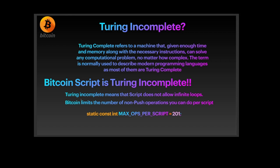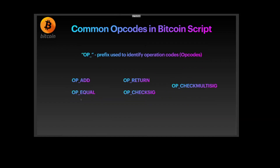The reason is that if there's a bad actor who writes a bad script, it can actually lock down Bitcoin. That is why Bitcoin limits the number of non-push operations per script. Looking at the Bitcoin source code, the maximum operations per script is limited to 201. It has been deliberately and intentionally designed to be Turing incomplete. In Ethereum, you have a gas concept — if a bad actor writes a bad program, the gas runs out and the script stops.